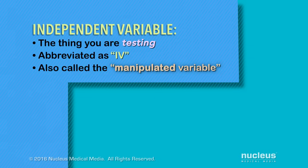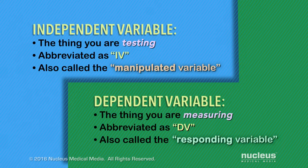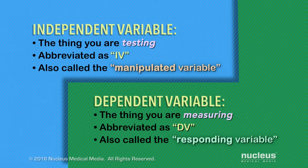In an experiment, the dependent variable is the thing you're observing and measuring — the thing you're anticipating may be affected as a result of exposure to the independent variable. It's often abbreviated as DV and sometimes called the responding variable because it responds to the change that you make.